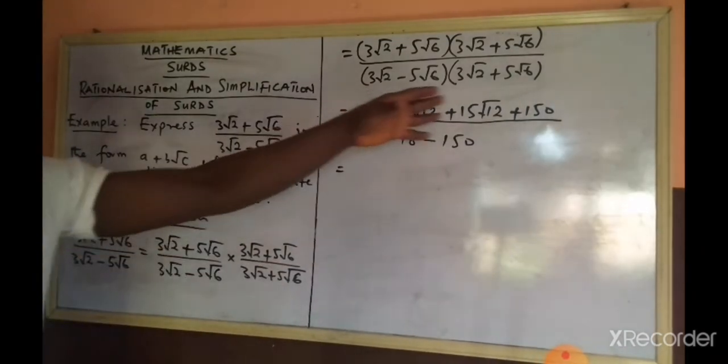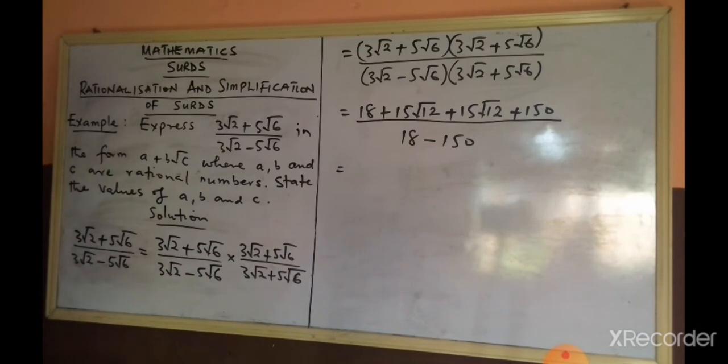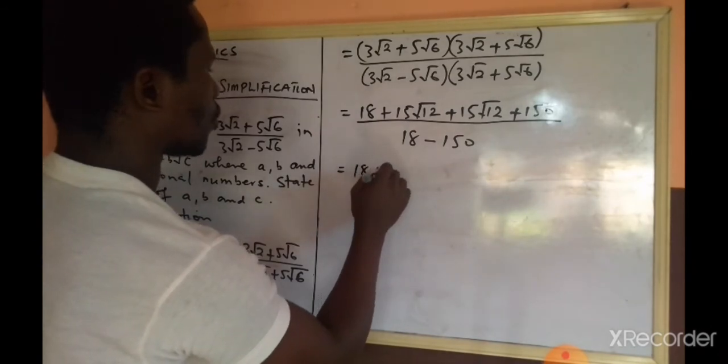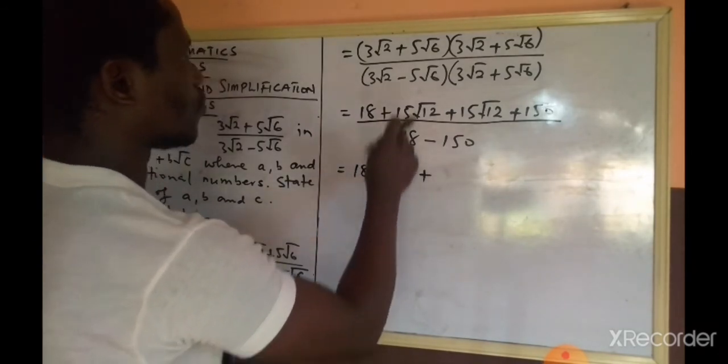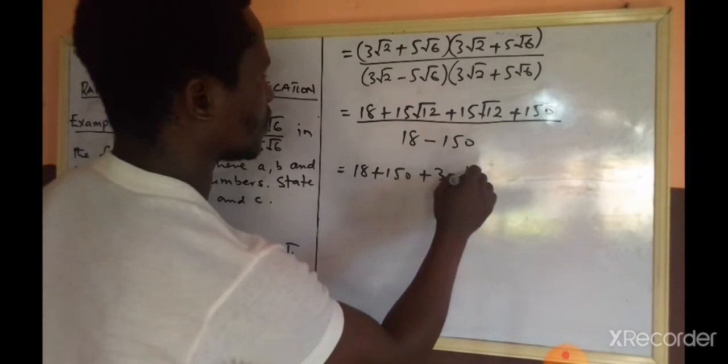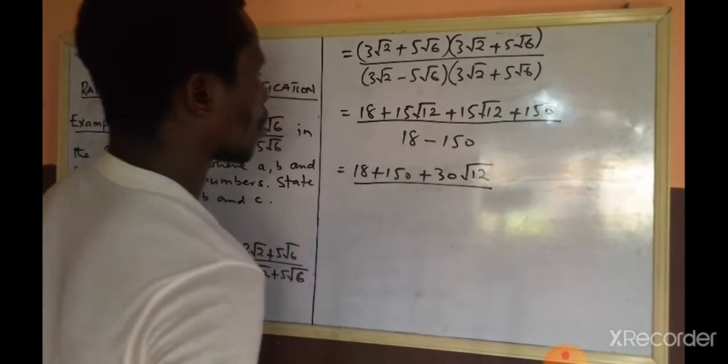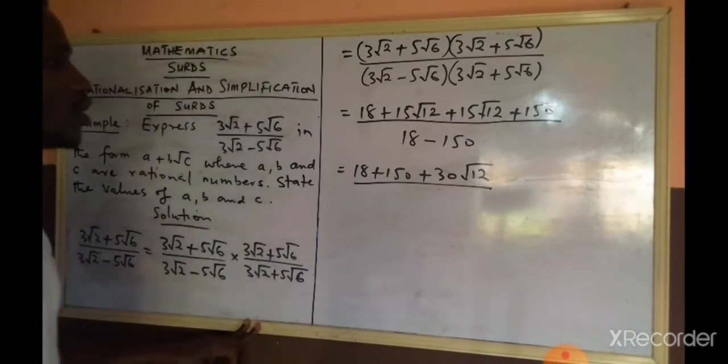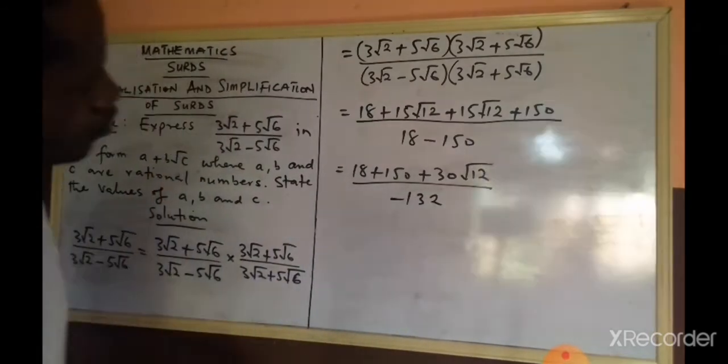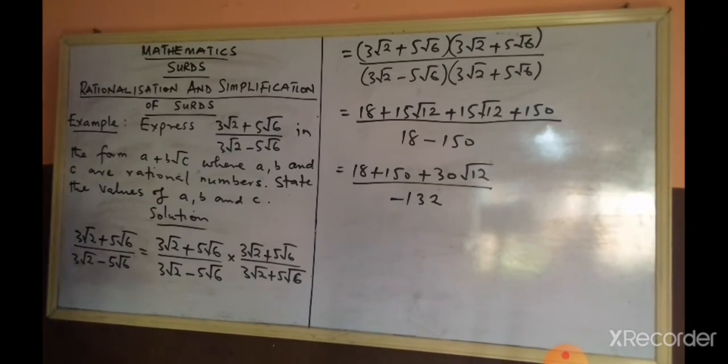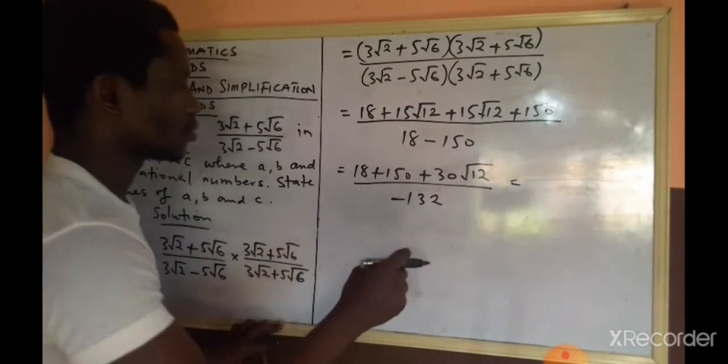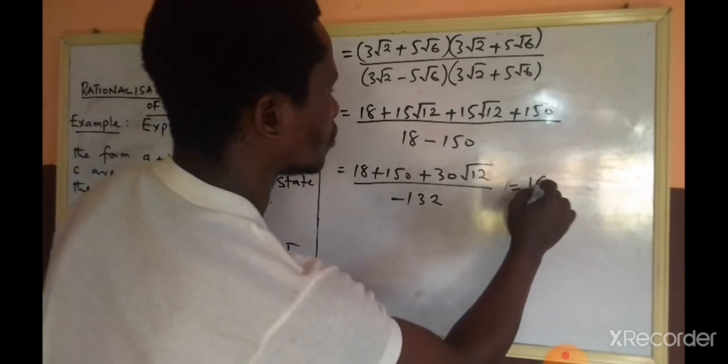Minus times plus √ gives us minus 5√6 times 5√6 gives us 150. And to further simplify the numerator, we have 18 + 150 + 15√12, that will be giving us 30√12, all over 18 - 150, that will give us -132. Now 18 + 150 will give us 168.